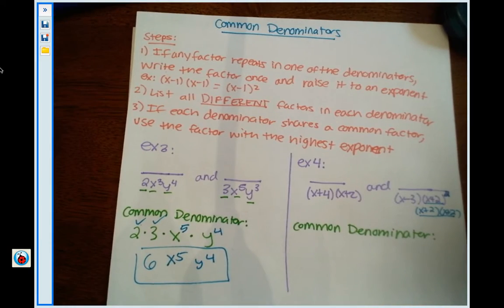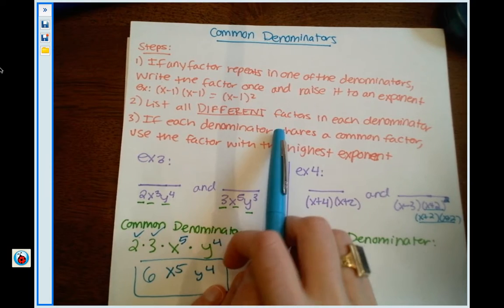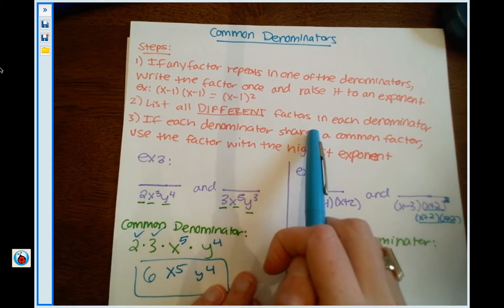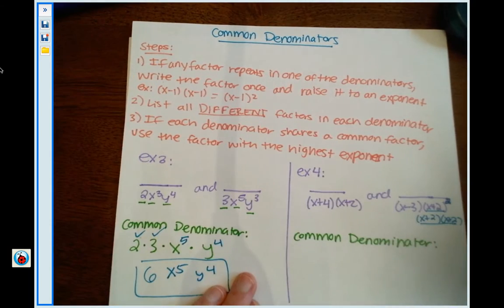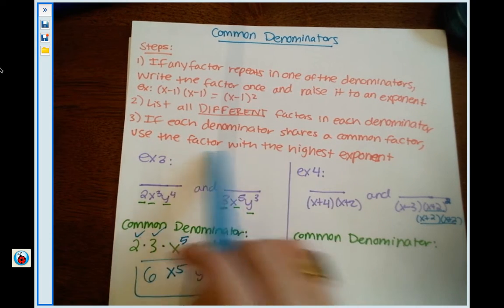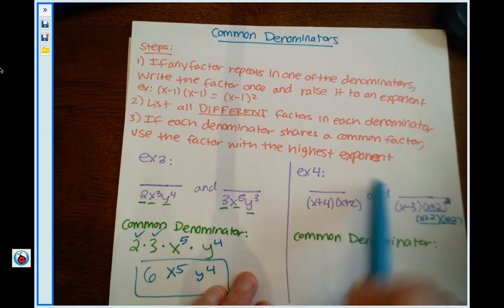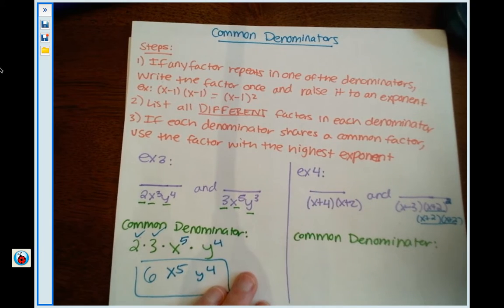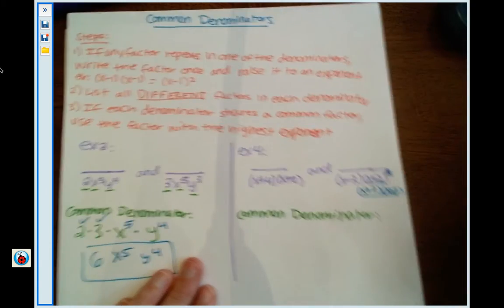Now it says list all the different factors in each denominator. So I'm going to grab one of every different thing I see, and remember, if we see one that's in common between each of the denominators, we must pick the one with the highest exponent.